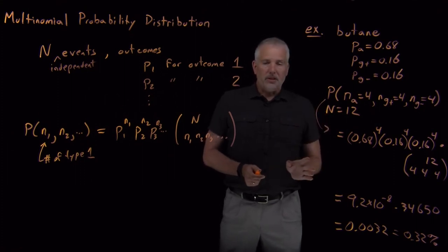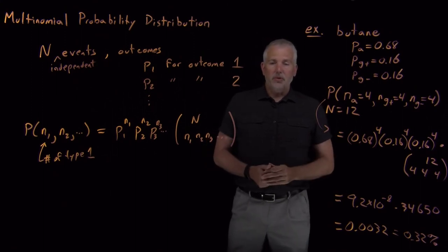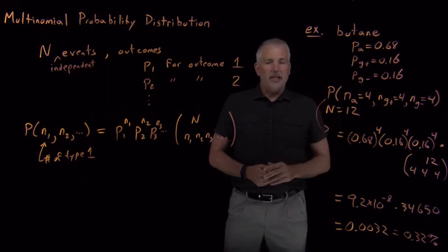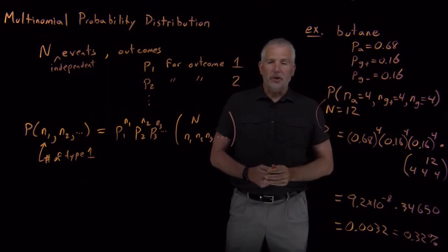So this completes the set of basic probability rules that we're going to need, and the next step will be to start using those to calculate properties like these and more interesting ones for real chemical systems.